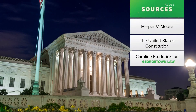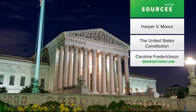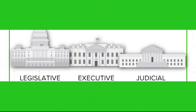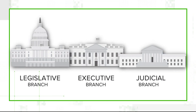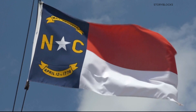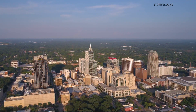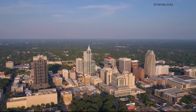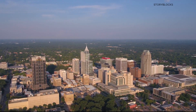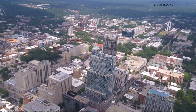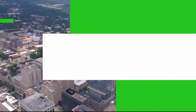Our sources are the case of Harper v. Moore, the U.S. Constitution, and Georgetown law professor Caroline Fredrickson. This is a case about checks and balances. The Supreme Court of North Carolina tossed out the state's new legislative maps, finding the districts were gerrymandered in violation of state law. The cliche is that the elected officials get to pick their voters rather than the voters picking their elected officials. The court then drew its own maps, and a group of lawmakers sued.